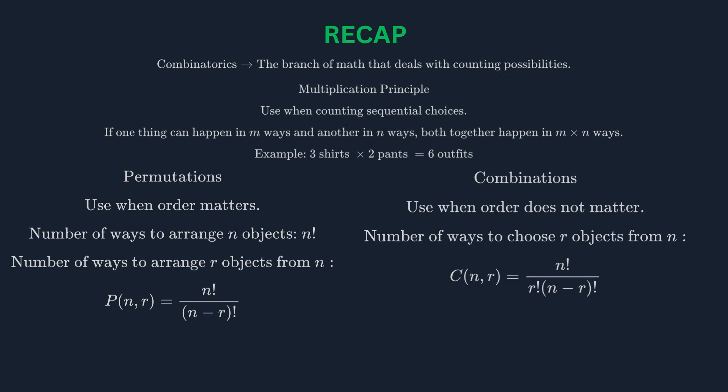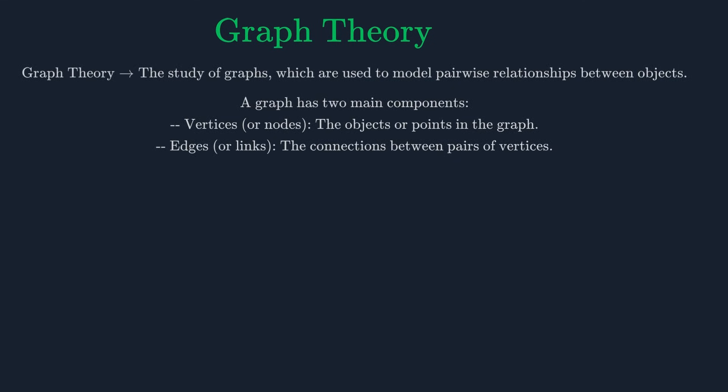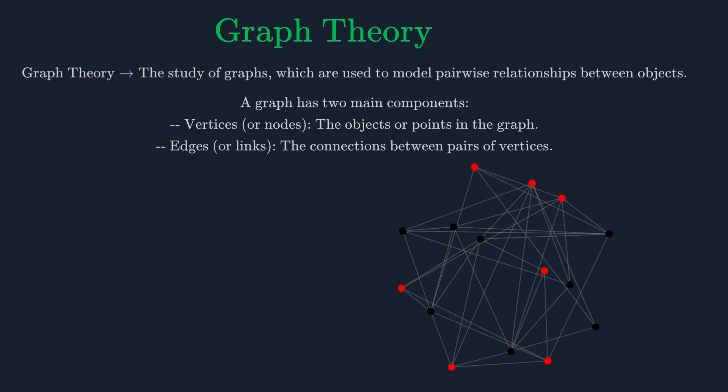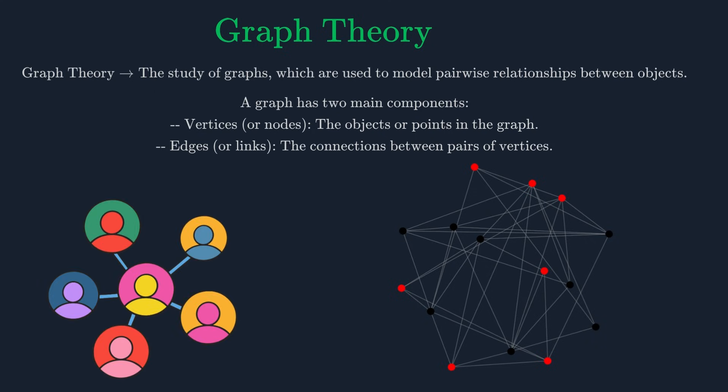Our fifth major topic is graph theory. Graph theory is the study of graphs, which are mathematical structures used to model pairwise relations between objects. A graph consists of two things: a set of vertices (or nodes) and a set of edges (or links) that connect pairs of vertices. Imagine a social network. Each person is a vertex, and an edge exists between two people if they are friends. This is a perfect example of a graph. The vertices are the people, and the edges are the friendships.